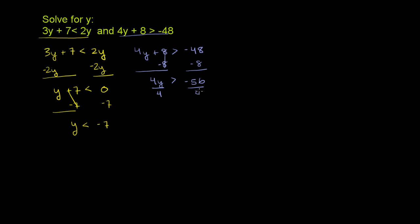So we're going to go another 8 negative, so 48 plus 8 would be 56, making this negative 56. Now to isolate the y, we divide both sides by positive 4. Let's divide both sides by 4: y is greater than negative 56 over 4. 40 is 10 times 4, and then we have another 16, so it's 14 times 4. So y is greater than negative 14.